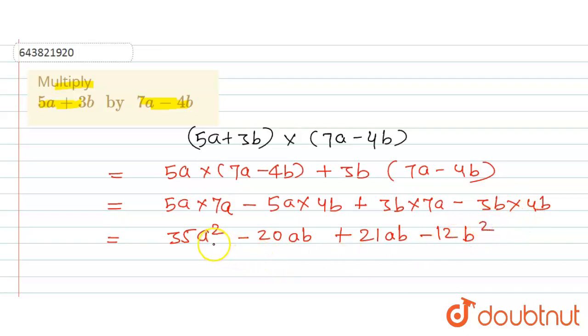So this is the answer for this question. And here also we can simplify this, so this can be written as 35a squared, minus 12b squared, and minus 20ab here, plus 21ab.